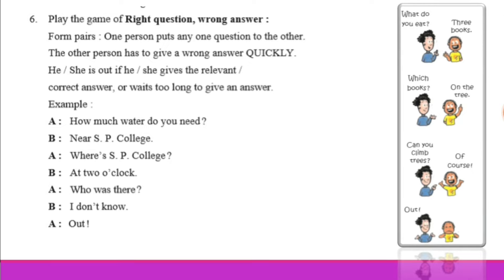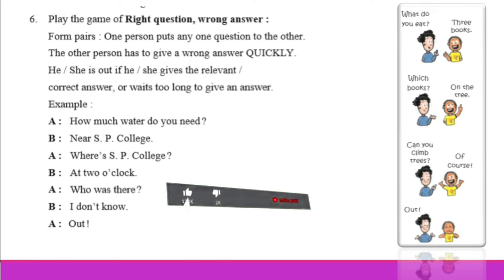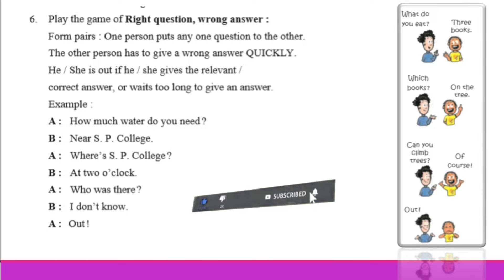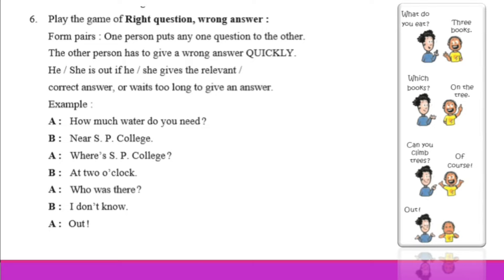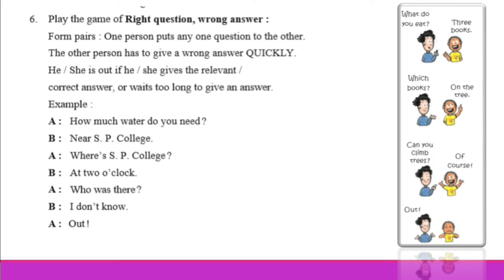Activity number 6: Play the game of right question, wrong answer. One person puts any one question to the other. He or she is out if they give the relevant correct answer, or waits too long to give an answer, or guesses the speaker's question — that means they are out.